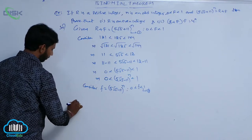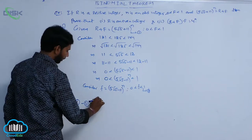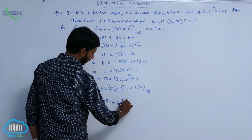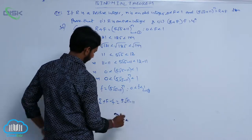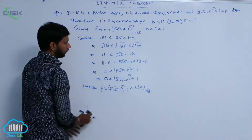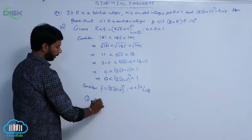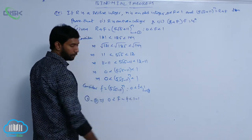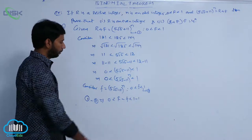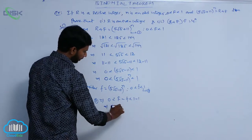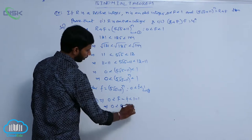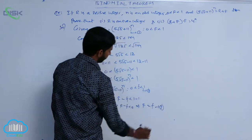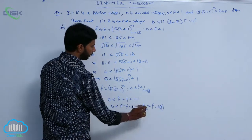From conditions 1 and 2: R + F − f lies between 0 and 0, since 0 < F < 1 and 0 < f < 1. This implies 0 < F − f < 0, which means F = f. This is condition number 3.